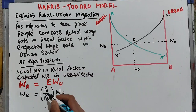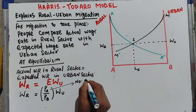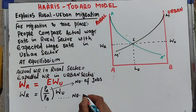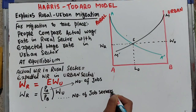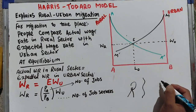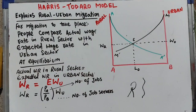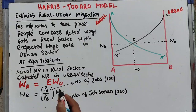Here, PA is the number of jobs available in the urban sector, and PB is the number of job seekers in the urban sector. If a person from the rural area wants to go to the urban area, they first calculate their probability of getting a job, which equals the number of jobs in the urban sector divided by the number of job seekers. For example, suppose there are 100 jobs and 200 job seekers.